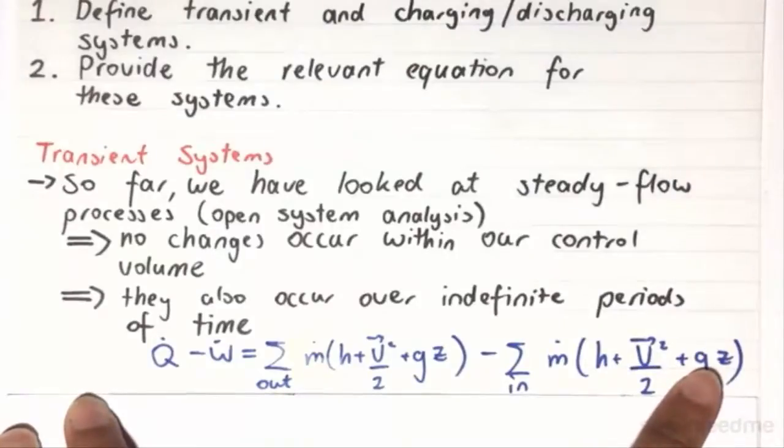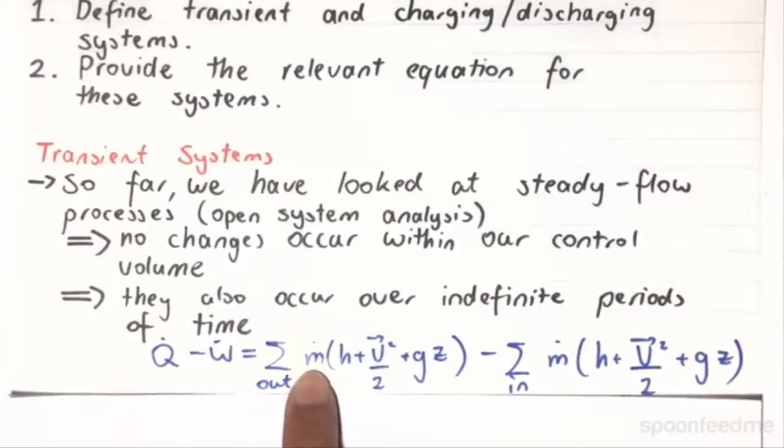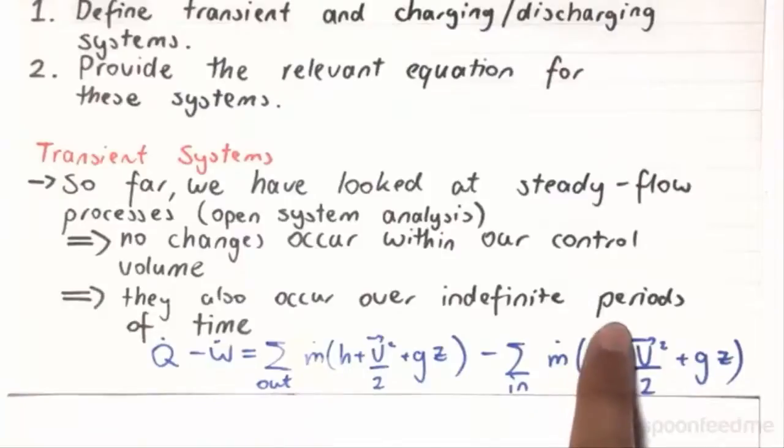Now in this situation, as you can see, it's Q dot, work dot, and M dot. We are working in terms of rates. So this is the kilojoules per second, or kilowatts. This is in kilograms per second. So the periods of time are actually not defined at all.